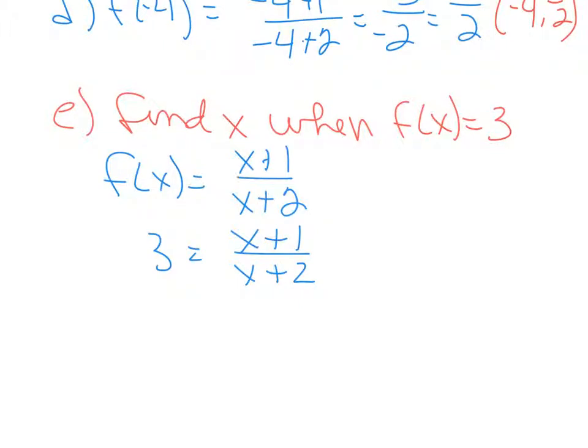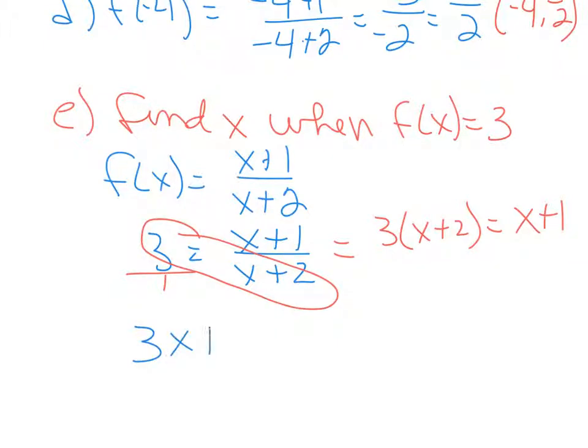The first thing you need to do is get this (x+2) off of there. If you know the law of proportions, you know that you can cross multiply to get rid of that denominator. So 3 times (x+2) is the same as 1 times (x+1), or x+1. You end up with this equation here once you get that denominator out of there, and then you can simplify and solve. Using distributive property: 3x+6 equals x+1.